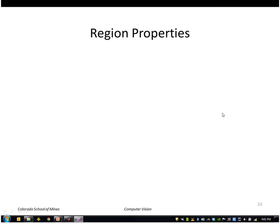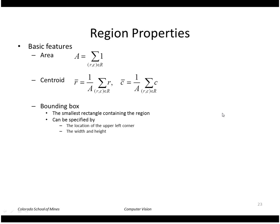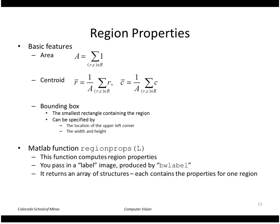Now that we have segmented regions, we want to compute some properties of those regions. We're going to look at the area of the region, the centroid, and the bounding box, where the bounding box is simply the smallest rectangle containing the region. We'll use the MATLAB function called regionprops, where we pass in a label image produced by bwlabel and it returns an array of structures, each containing the properties for one region.